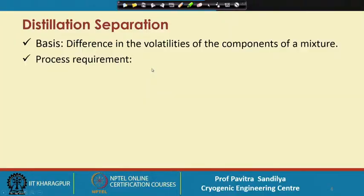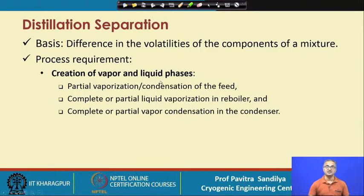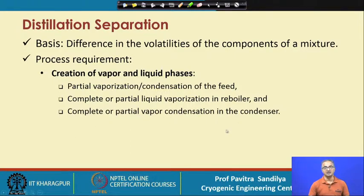The process requirements for distillation include the creation of vapor and liquid phases. Distillation can only be carried out when we have both vapor and liquid phases — we cannot carry out distillation with a single phase. To create these two phases, we can either partially vaporize a liquid feed, partially condense a vapor feed, or do complete or partial liquid vaporization in the reboiler.